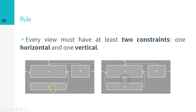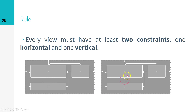Let's look at an example. View C only has a horizontal constraint but is missing the vertical constraint. If you run this user interface on your Android device or emulator, you will see a problem — view C will not be aligned correctly. In order to make it work properly, you must add a vertical constraint to view C.